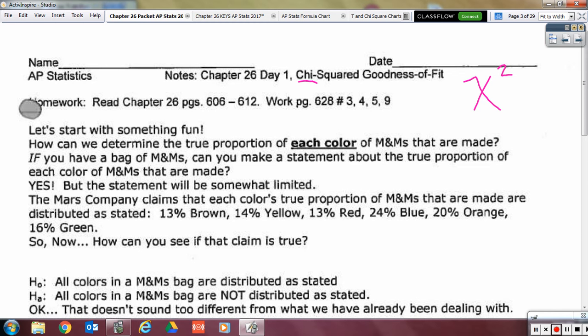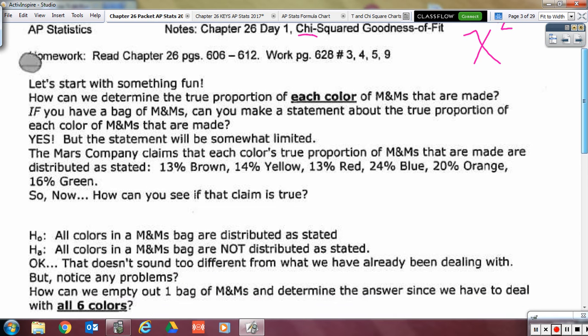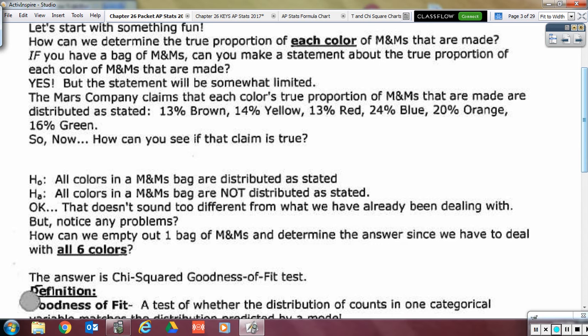So if we have a bag of M&M's, which you're going to get your own sample of, and you want to make a statement about that true proportion, can we do that? We can make a statement, but it is limited. We cannot exactly say how much of each one there is or even which ones are off by how much. We'll make a collective statement about all of the proportions together. For example, the Mars company claims that each color of the regular M&M's are these particular percentages, 13% brown, 14% yellow, and so on.